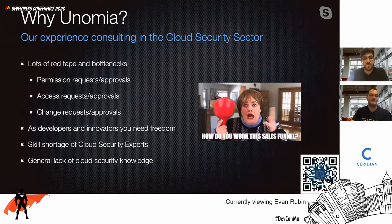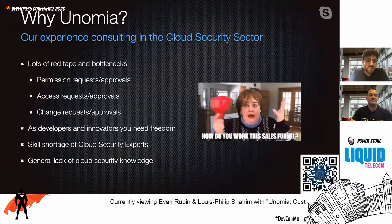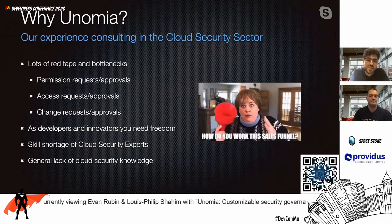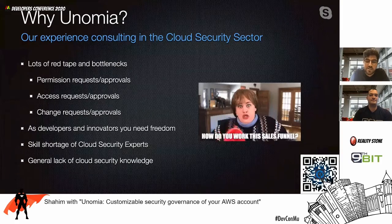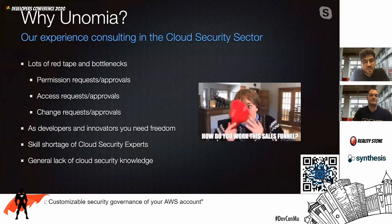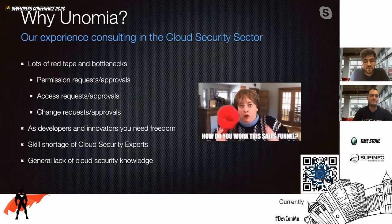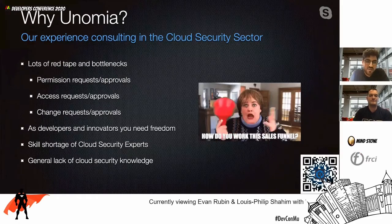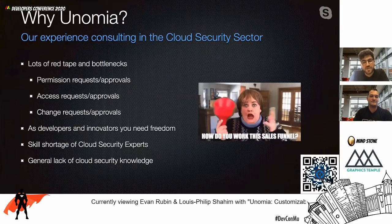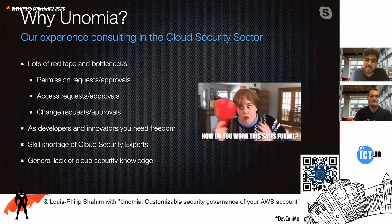From our years of cloud consulting for very large firms, we've found various issues and blockers that led to the formation of Unomia — lots of red tape and bottlenecks in processes such as permission requests, access requests, and change requests, especially in cloud divisions where the cloud encourages freedom and continuous deployments. As a developer, you need the freedom to innovate and build. But with the huge skill shortage of cloud security experts and general lack of cloud knowledge, we can't just let developers run free, as there are large risks of data leaks, breaches, and various other attacks.